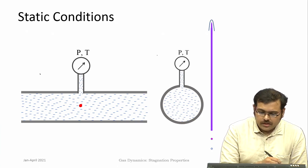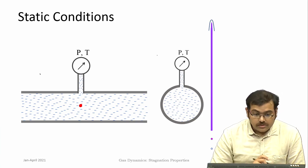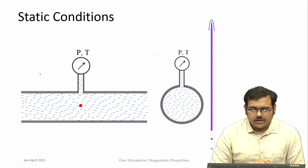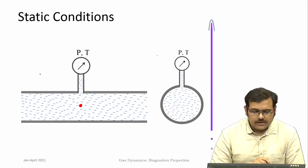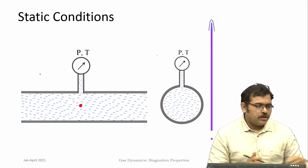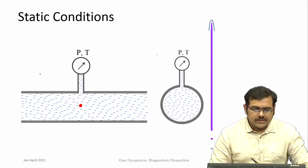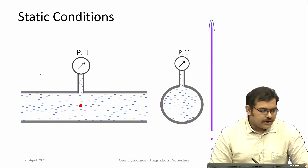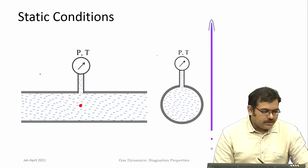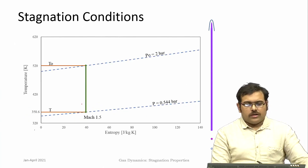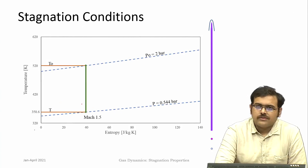If you consider static conditions, you do not specifically say static pressure and static temperature — they are normally written as just pressure and temperature, and it is understood that it is static conditions one is talking about. When you see descriptions in either textbooks or numericals and one describes just pressure and temperature, it means it is the static pressure and static temperature at that particular point. Now let us come to stagnation conditions.